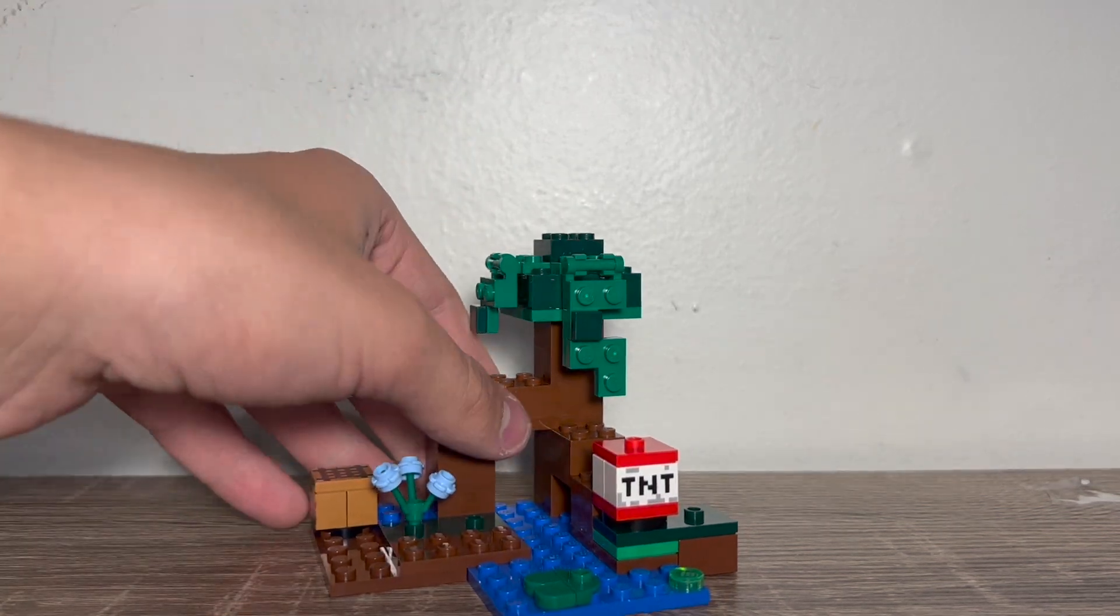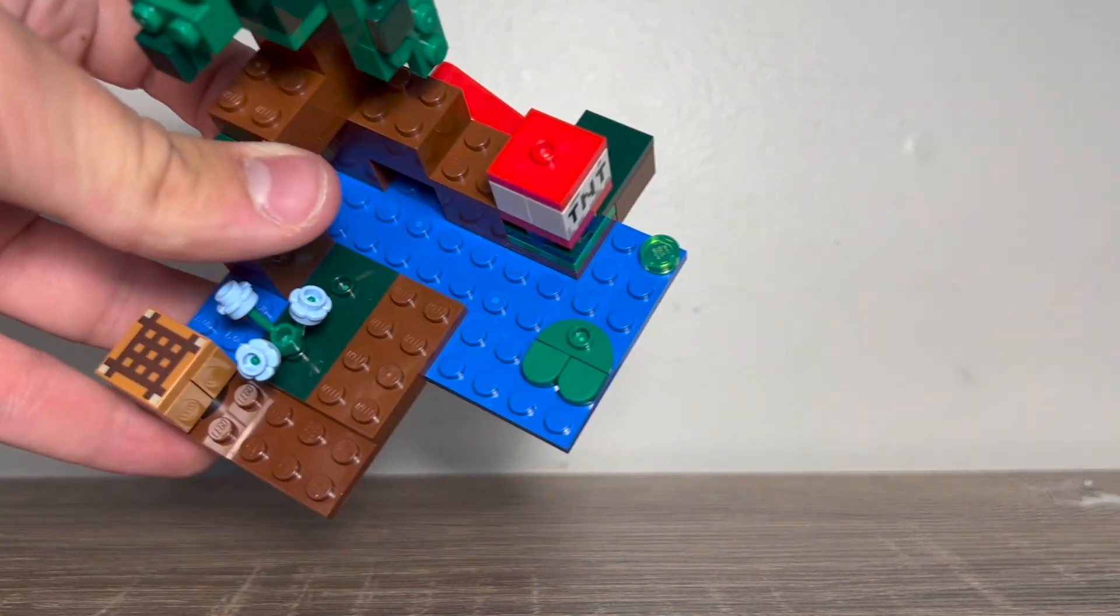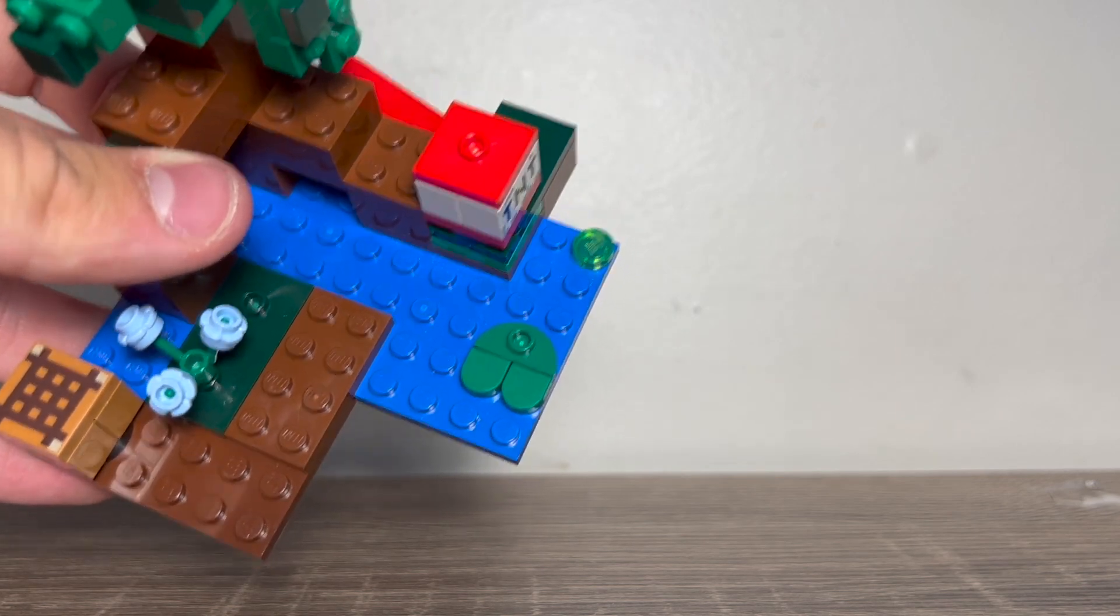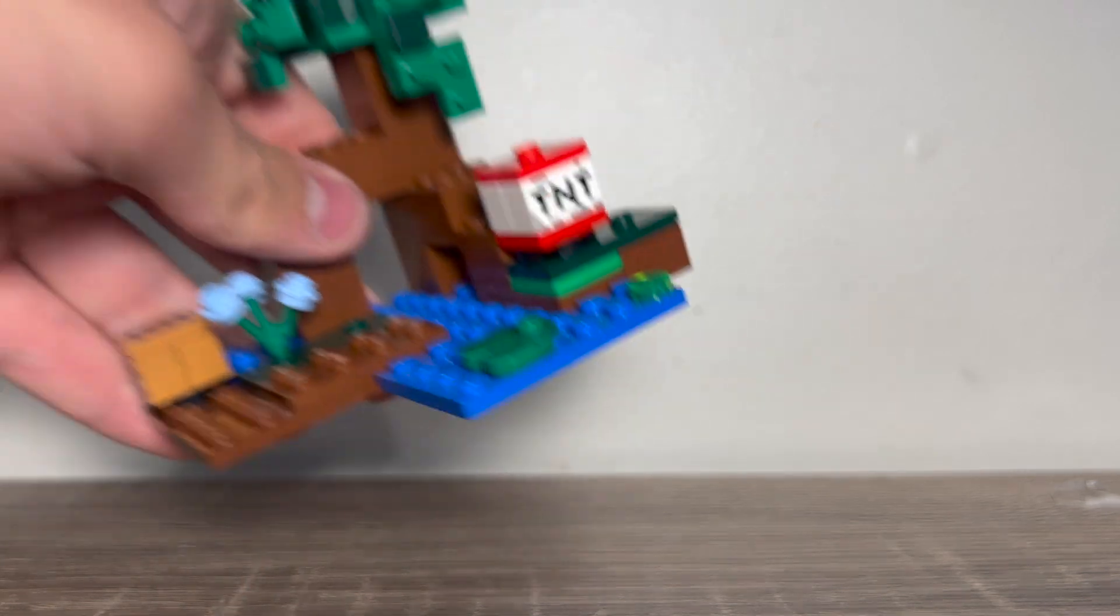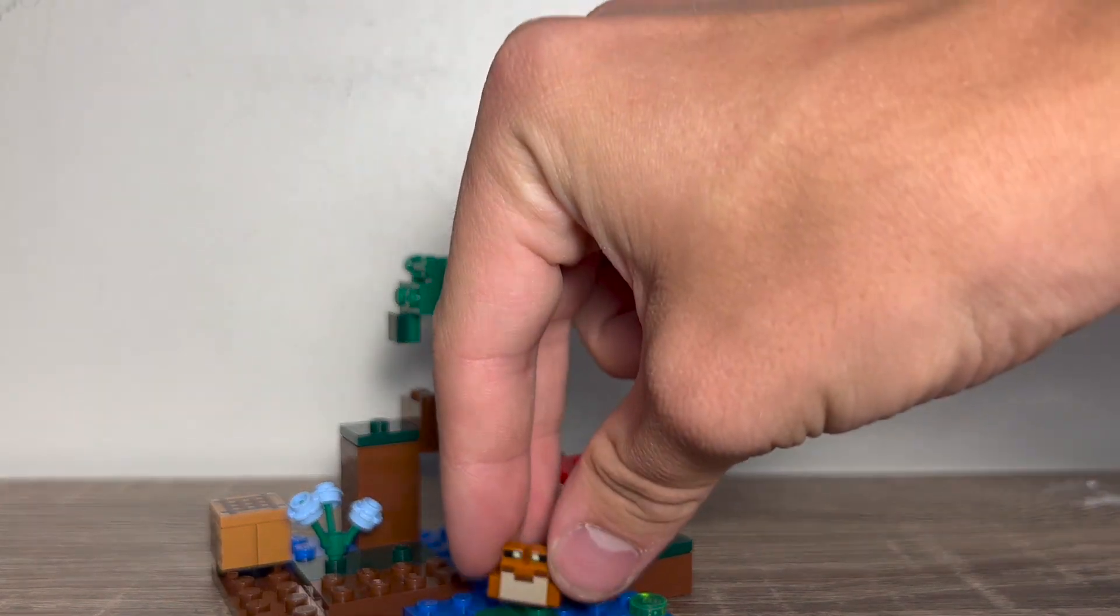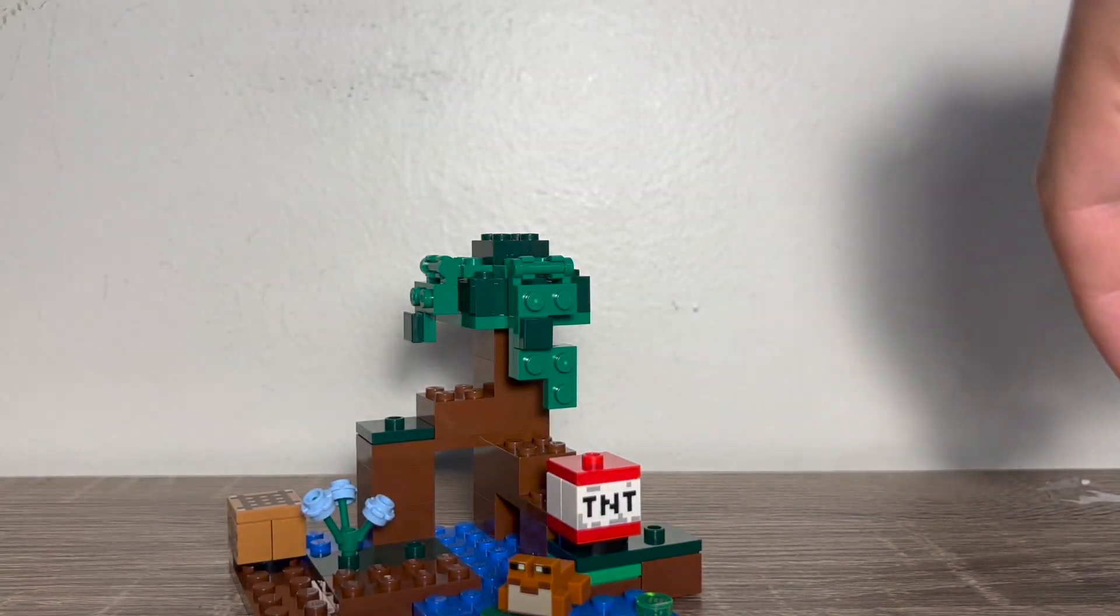We have a lily pad, which uses a new piece right there, which has a stud on it. It's like a two-by-one rounded tile with a stud. So now you can put a frog right there, which looks super cool.